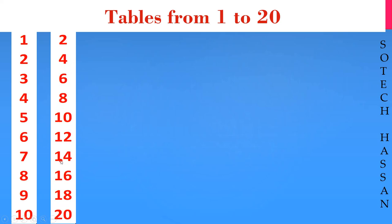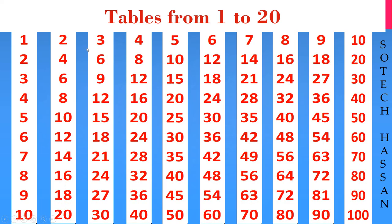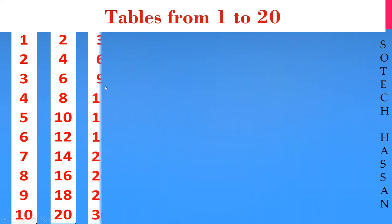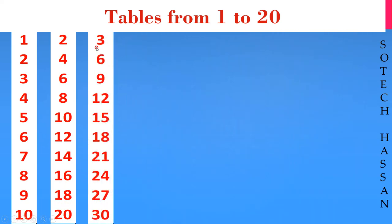2 7s are 14, 2 8s are 16, 2 9s are 18, 2 10s are 20. Third table: 3 1s are 3.